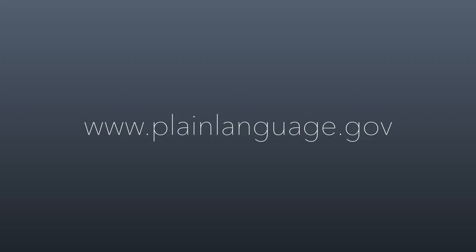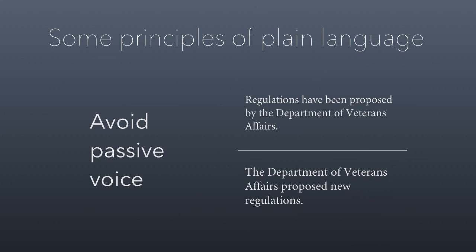We're going to dig into principles of plain language. I'm going to go through a bunch of rules, and then in class we're going to apply these rules as we improve a prompt that I have for all of you. So, the first rule or principle is to avoid the passive voice. On the top it says 'regulations have been proposed by the Department of Veterans Affairs' — that's a passive voice sentence. The reason is you don't have an action verb; you have 'to be' as the principal verb: 'have been proposed.' You should be using a strong verb instead. The improvement on the bottom is 'the Department of Veterans Affairs proposed new regulations.' Rather than saying 'have been proposed,' you just use the direct past tense version of propose, and it improves it. You'll notice the bottom is just cleaner, simpler, clearer, stronger. So that's an example of passive voice.